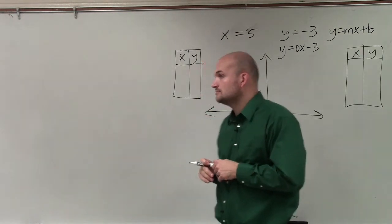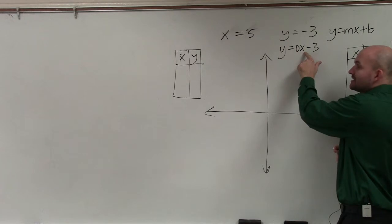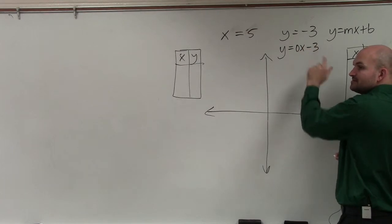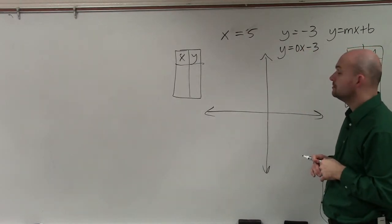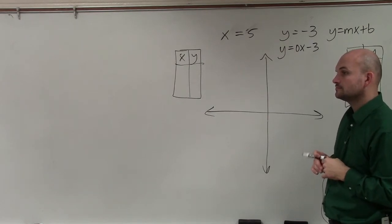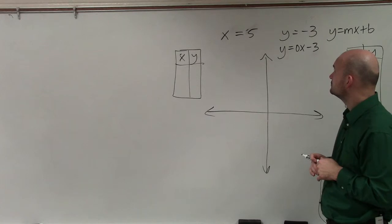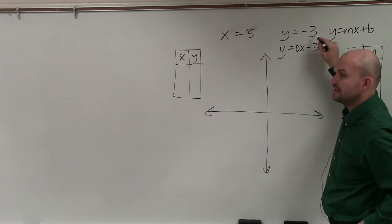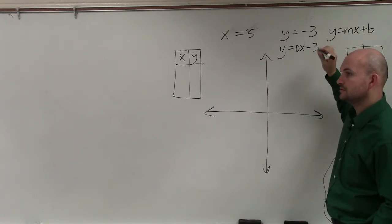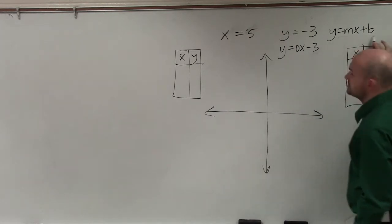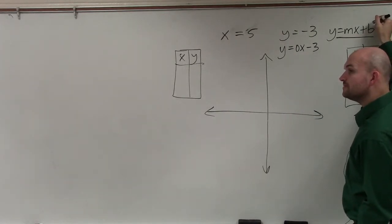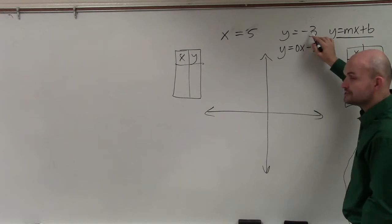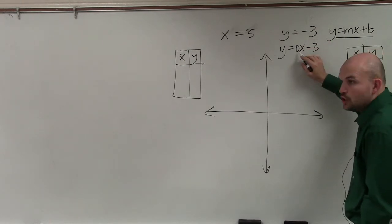Why wouldn't this be 1? Because if it was 1, it would be x — it would be x minus 3. But the equation is not x minus 3, the equation is negative 3. So that has to be 0, because 0 times x would be 0. That is your b — it's slope-intercept form. It's telling you the y. You only have your value of b. There's no number in front of x here; there's no x. Why is there no x? Because it's being multiplied by 0, so your slope is 0.